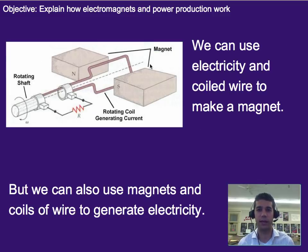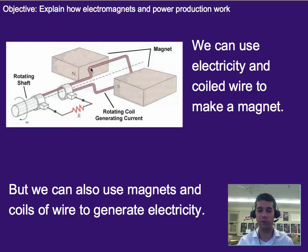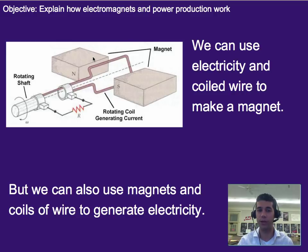Similar to how we can use electricity to create a magnet, we can also use a coiled wire and a magnet to create electricity. The coiled wire doesn't have any electricity flowing through it on its own. Instead, if we move this coil of wire through a magnetic field, it applies a force on the electrons inside, generating an electric field, and the electrons begin to move. By spinning this coil of wire inside a magnetic field, we actually create electricity — electron movement. It's not like we have to pump in electrons, because all the atoms in the wire already have them; we're just causing the ones in there to move.